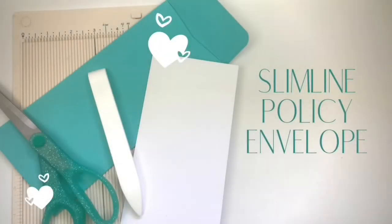Now let's move on to the matching policy envelope. The finish size is the same as a number 10 business envelope, which measures four and one eighth inches by nine and three eighths inches. You'll need a piece of 12 by 12 cardstock to create this envelope. Cut this piece to nine and one eighths inches by 12 inches.